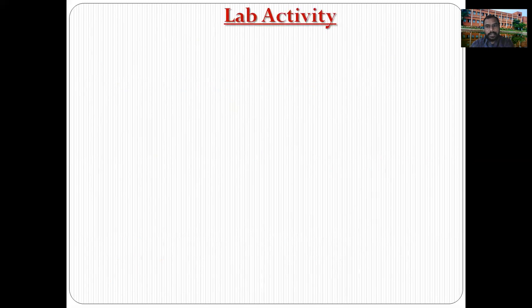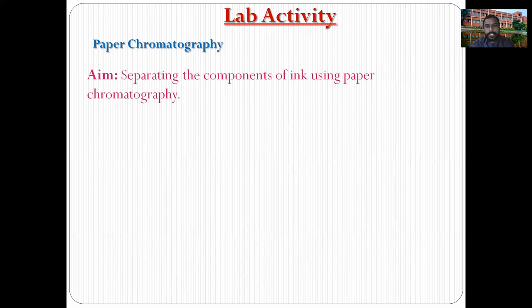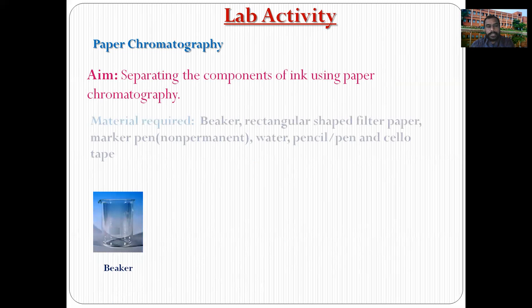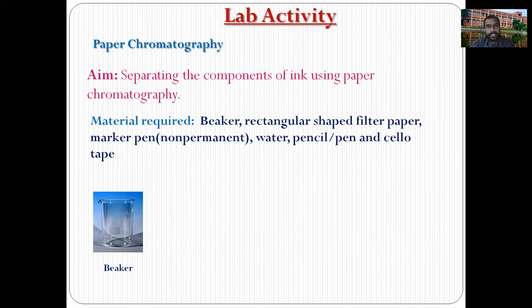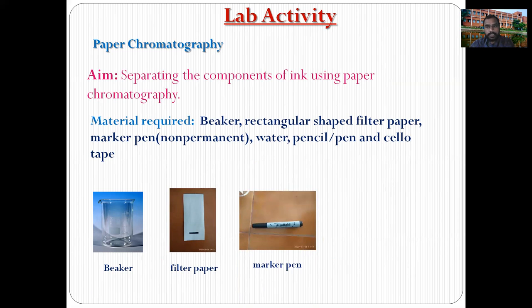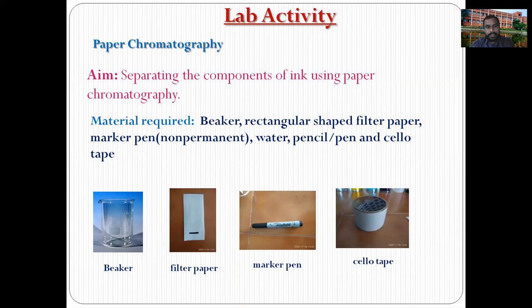Let us discuss the lab activity of paper chromatography. Aim: separating the components of ink using paper chromatography. Materials required: beaker, rectangular shaped filter paper, marker pen, water, pencil or pen, and cello tape. These simple materials are all we need to carry out the paper chromatography lab activity.